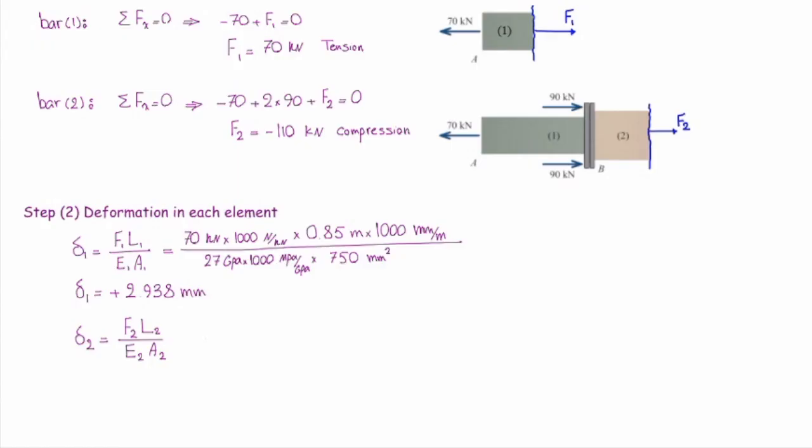Let's plug the values. F₂ is 110 with the negative sign. I'm going to multiply that by 1000 again. The length is 1.15 meter. Modulus of elasticity is 15 GPa. And area is 1400 square millimeter. And that gives me the total change in the length of element number two equal to negative 6.024 millimeter.